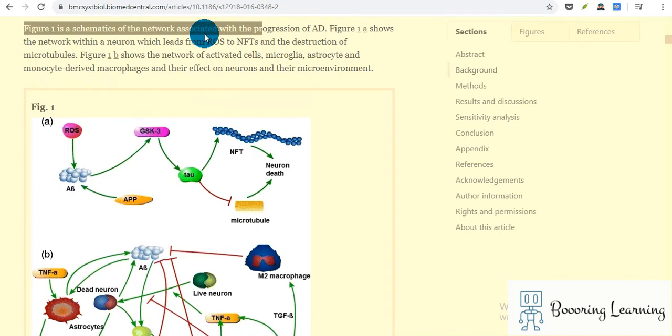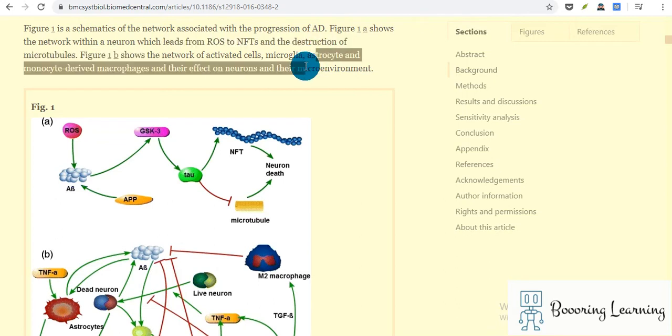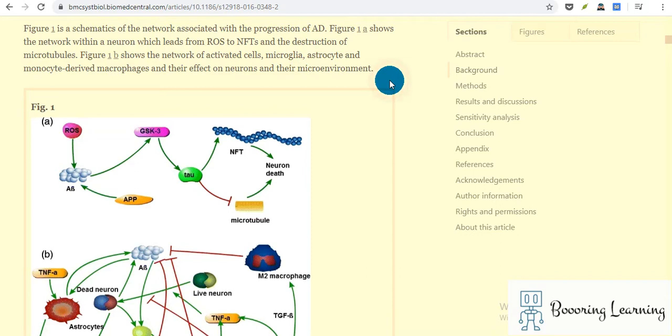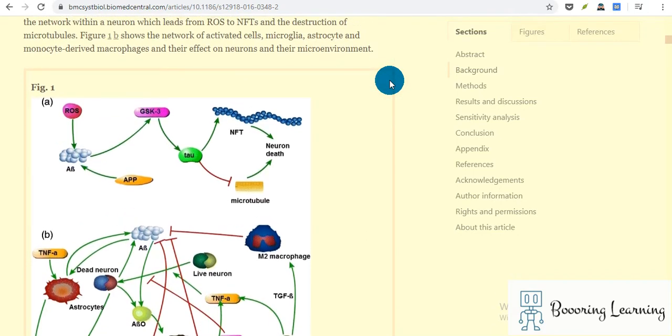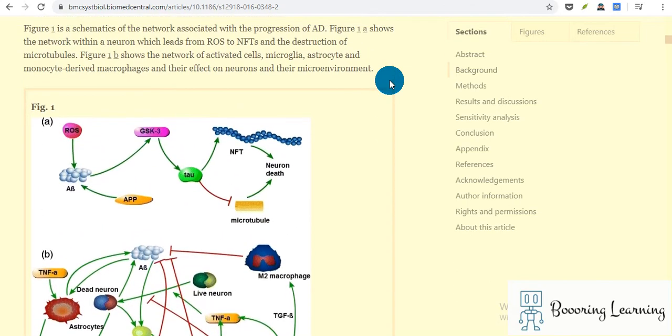Figure 1 shows the network associated with progression of Alzheimer's disease and within a neuron which leads from ROS to the destruction of the microtubules. Figure 1b shows the network of activated cells: microglia, astrocytes, and monocyte-derived macrophages, and their effect on neurons and their microenvironment.